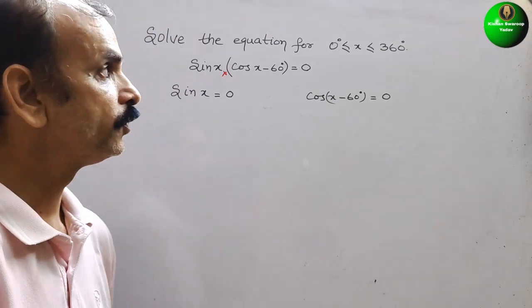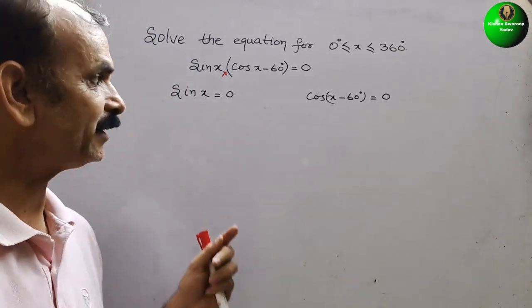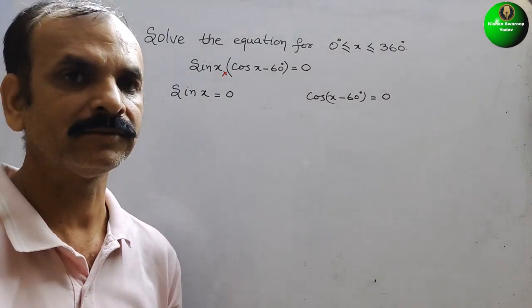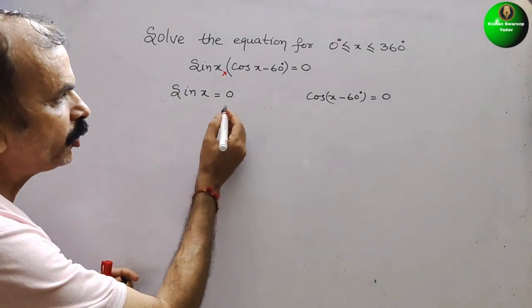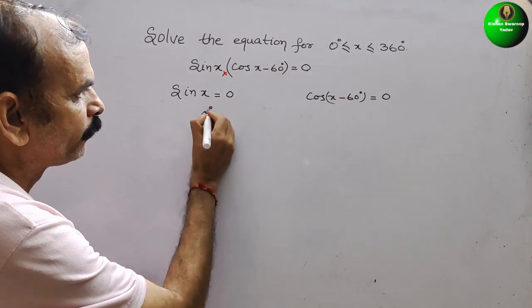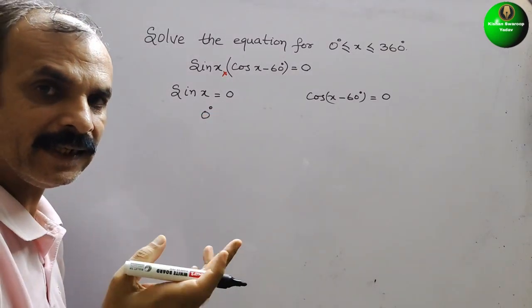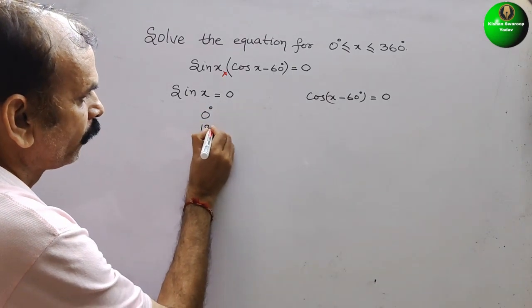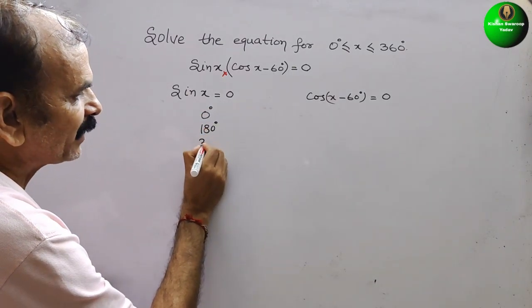Now, what we have to do? You see that sin x is 0 at which angles? So we can say it is 0 at 0 degree. Second, it is 0 at 180 degree. And third, it is 0 at 360 degree.